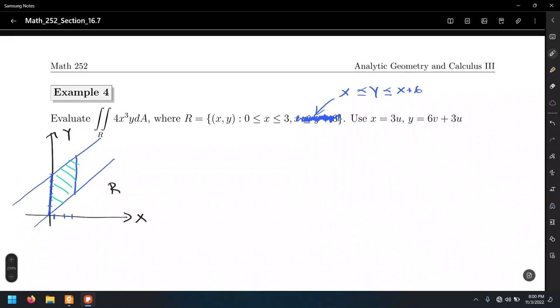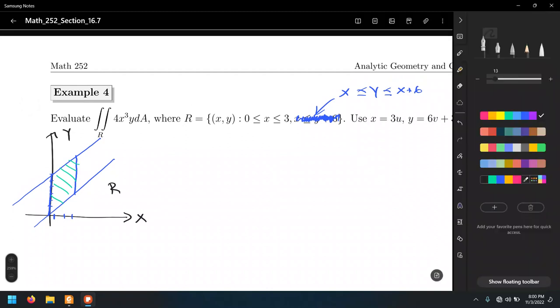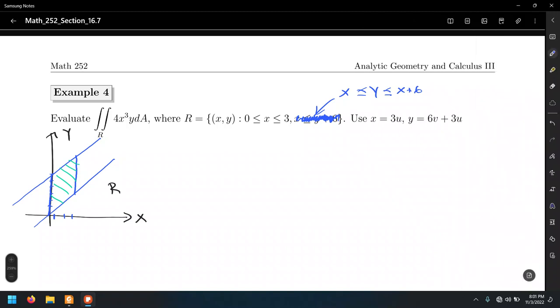In this case, X is only a function of u, and we're going to take advantage of that. Let's start with the first bound for X: 0 less than or equal to X less than or equal to 3. But we know that X equals 3u. Dividing the three sides of the inequality by 3, that means 0 less than or equal to u less than or equal to 1.